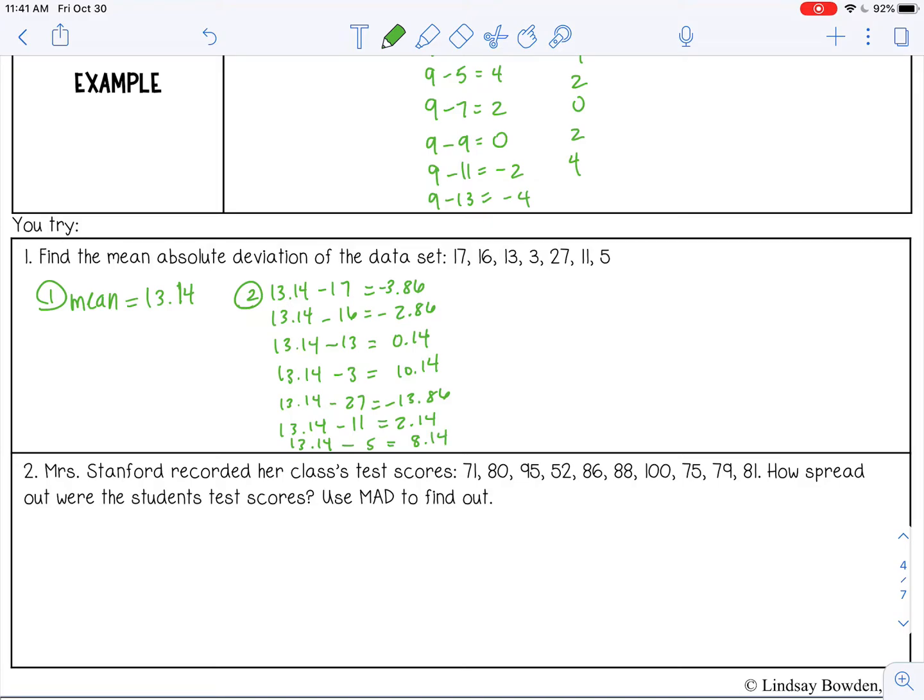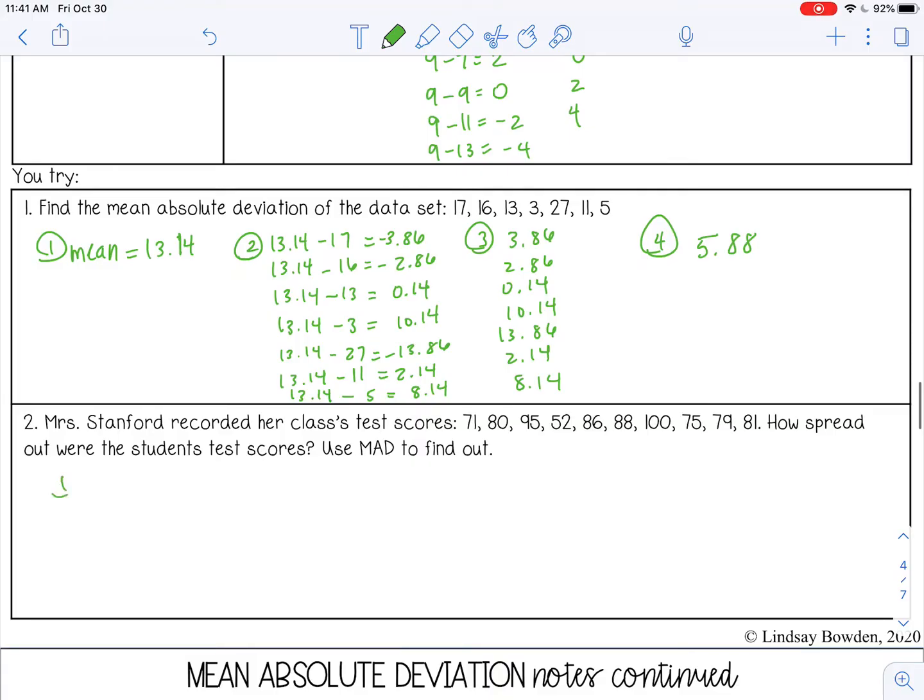Then I'm going to change all those to positive. And then number 2, I'm not going to write all this out on number 2, but I'm going to tell you I got a mean of 80.7. And then I found all the differences. I changed them all to positive, and then I found the average of those, and I got 9.3.